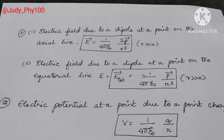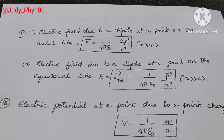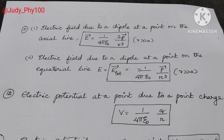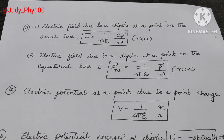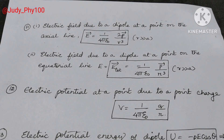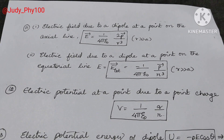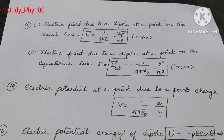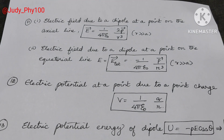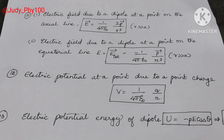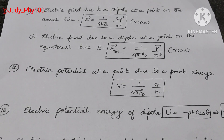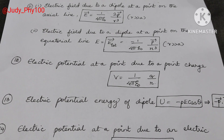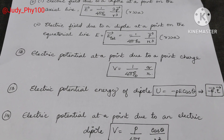Electric field due to a dipole at a point on the equatorial line: E total is equal to minus 1 by 4 pi epsilon naught, vector p divided by r cubed. Potential energy of a dipole in an electric field: U is equal to minus pE cos theta, which is a dot product.